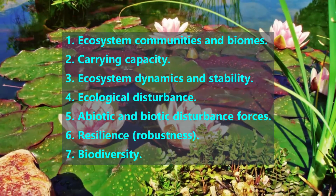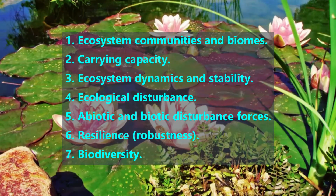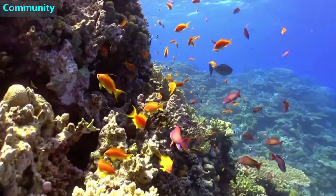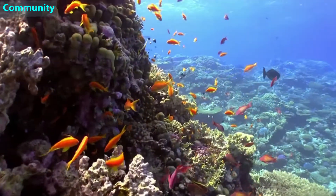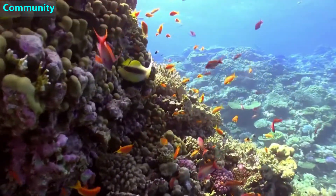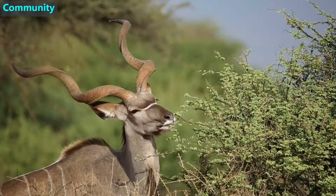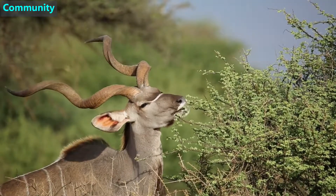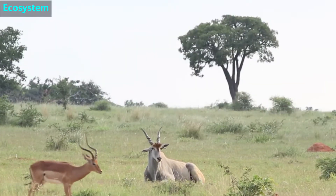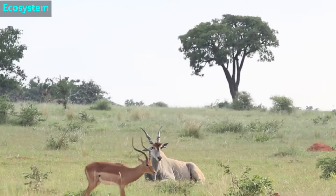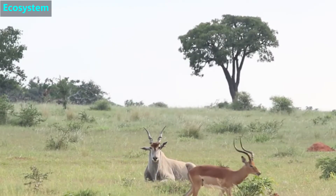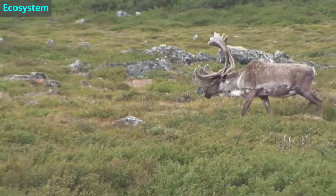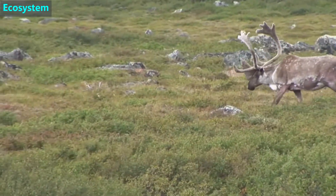Abiotic and Biotic Disturbance Forces; Resilience and Biodiversity. The word community refers to the living organisms that interact with each other in a particular place. Such interactions often mean one organism is eating another one. The word ecosystem means all the community, plus the non-living things in a place. Non-living things include the climate, rocks, soil, sunlight, and water.